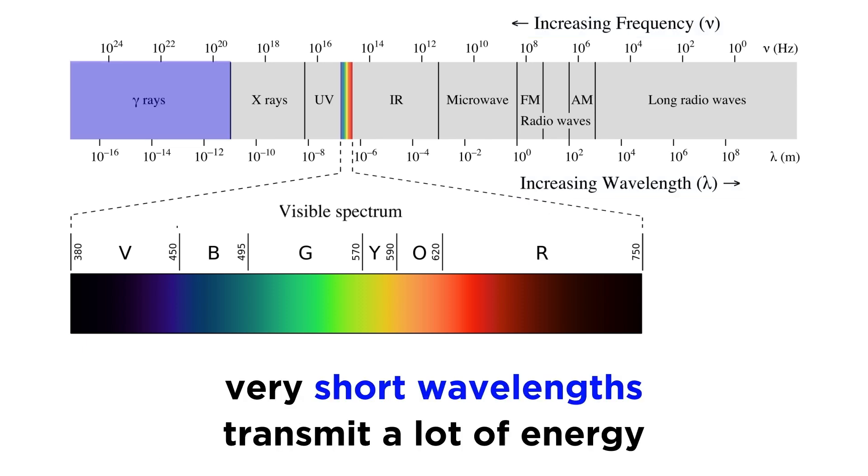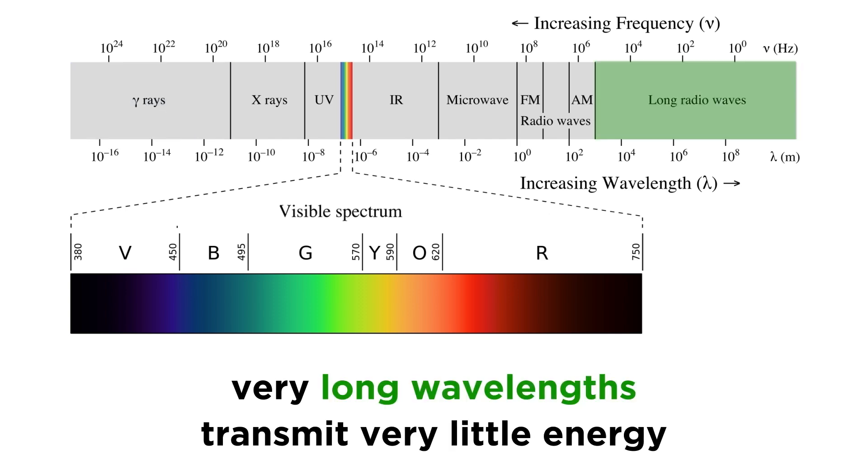Very short wavelengths of light transmit a lot of energy, such as is the case with gamma radiation, which has the shortest wavelength. The longest wavelengths correspond to radio waves, which transmit very little energy.